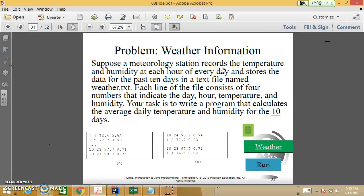And this is another example for weather information. So support the meteorology station records the temperature and humidity at each hour of every day. And store the data for the past 10 days. In the text file. Name it weather.txt. So each line of the file consists of four numbers. Indicate the day, hour, temperature, and humidity. So you text to write program that calculates the average daily temperature and humidity for the 10 days. So you see this is day one to day 10, hour one until like hour 24, right? Humidities and then temperatures. So you need to write program to read in these text files, right? And the best one,